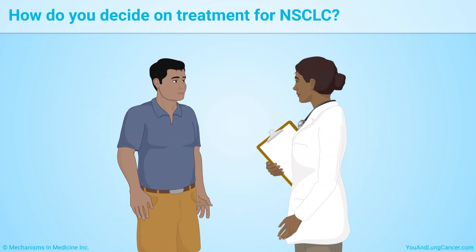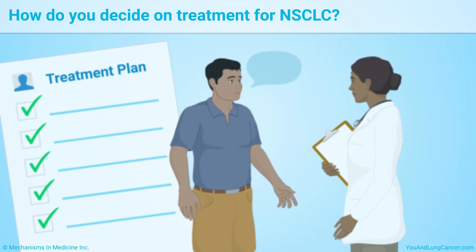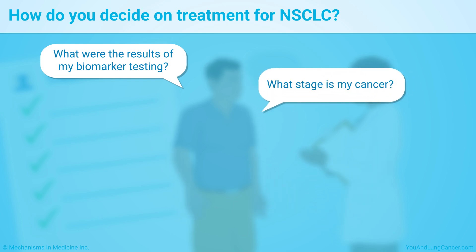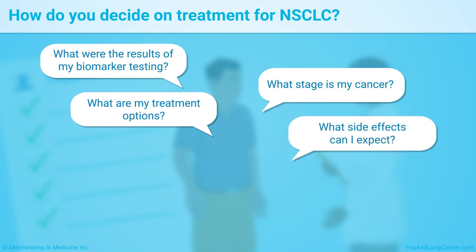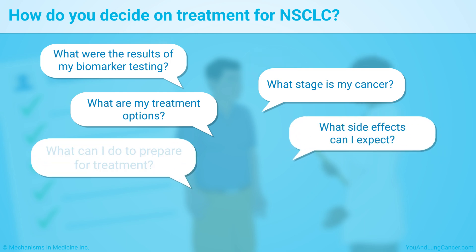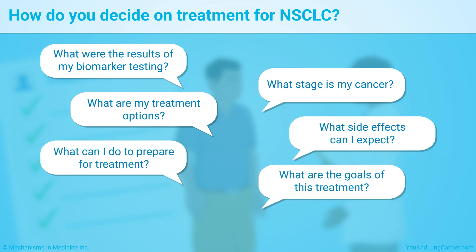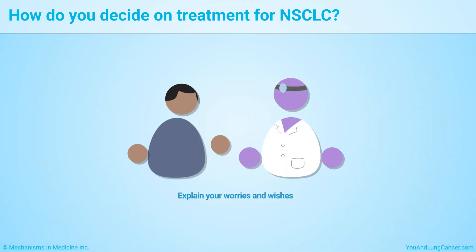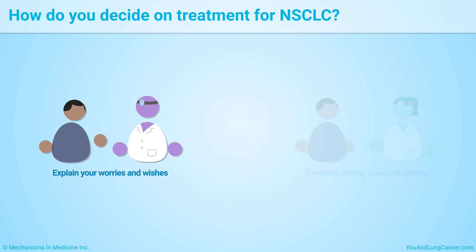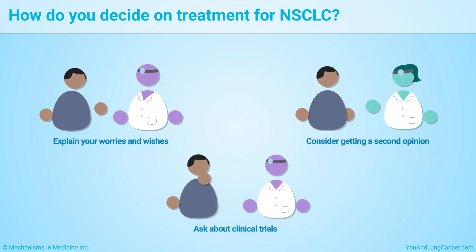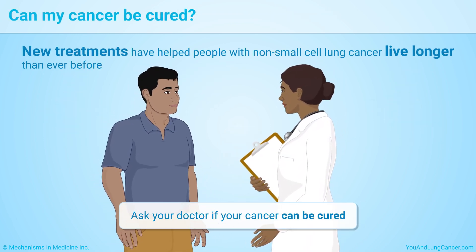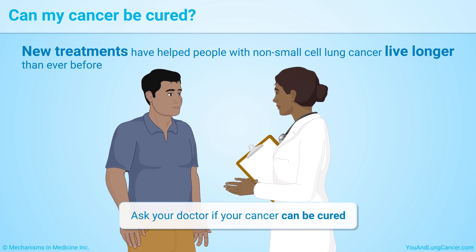When you meet with your doctor, be sure to ask lots of questions — for example: What were the results of my biomarker testing? What stage is my cancer? What are my treatment options? What side effects can I expect? What can I do to prepare for treatment? What are the goals of this treatment and how likely is it to succeed? Explain your worries and wishes, consider getting a second opinion, ask if there are any clinical trials you could join, and ask your doctor if your cancer can be cured. New treatments have helped people with Non-Small Cell Lung Cancer live longer than ever before.